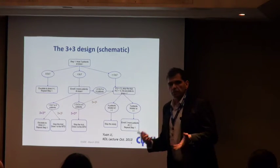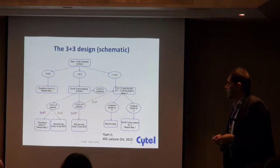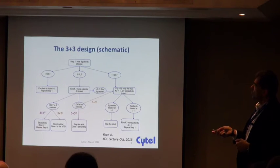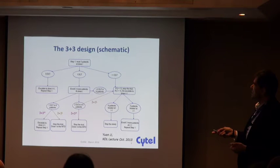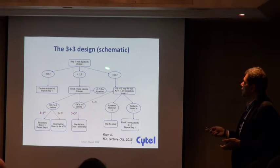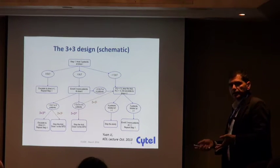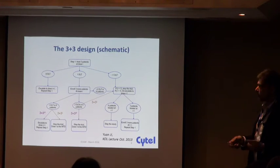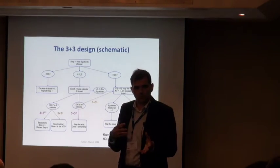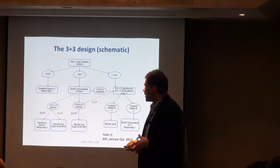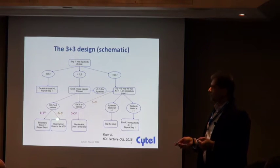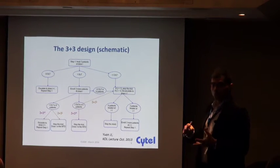The way the 3+3 design works: you enter subjects in cohorts of three. If you observe no dose-limiting toxicities, you escalate to the next dose level. If you observe one DLT out of three, you add three more subjects at that dose level. If you have more than one, you either stop the trial or de-escalate. There are a couple of different versions depending on whether you want a more or less conservative approach, mostly concerning what happens when you have one DLT out of six subjects.